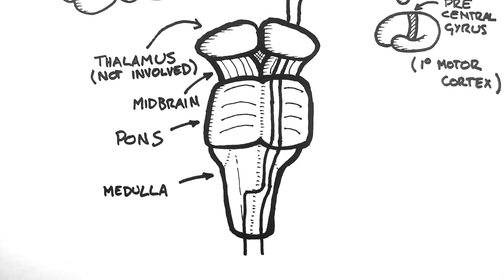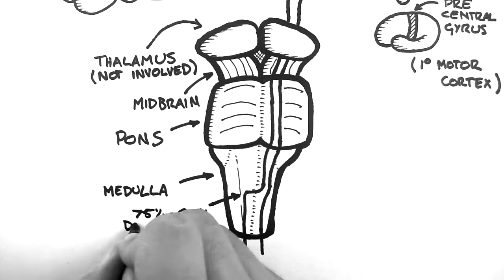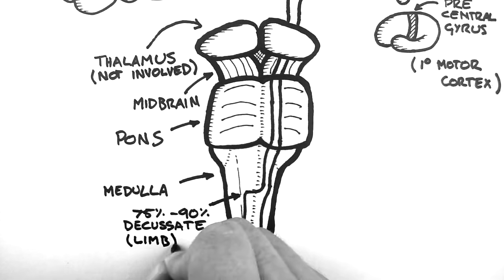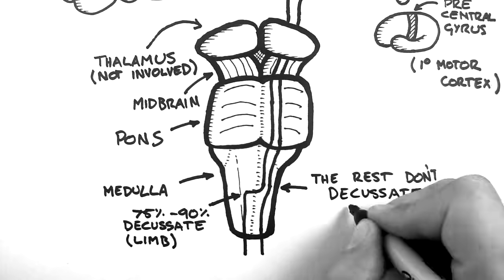As the pathway descends into the medulla, 75-90% of the fibres decussate. These are the fibres that will innervate the limbs. The axial fibres don't decussate here.